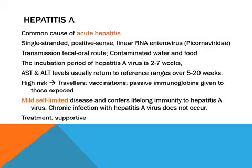Hepatitis can be caused by five hepatotropic viruses: A, B, C, D, and E. Hepatitis can also be caused by drugs and toxins, and most of the time the clinical manifestations are more or less the same regardless of the causative agent. Hepatitis A virus is a small 27-nanometer RNA hepatovirus; it is a singly-stranded positive-sense linear RNA enterovirus. Its main route of transmission is fecal-oral, and its incubation period averages around 30 days.